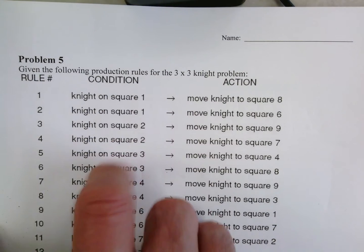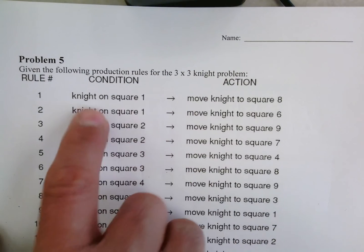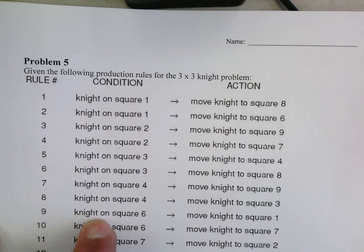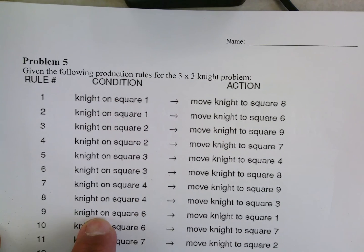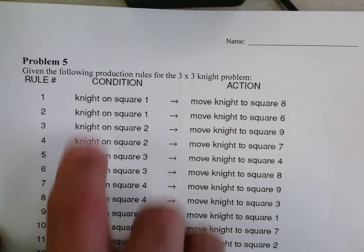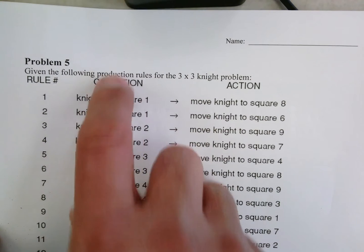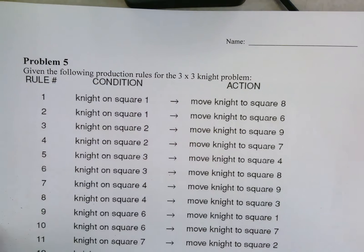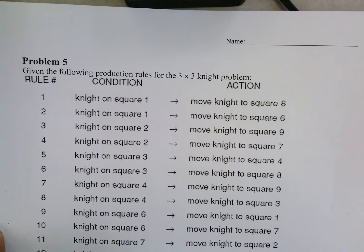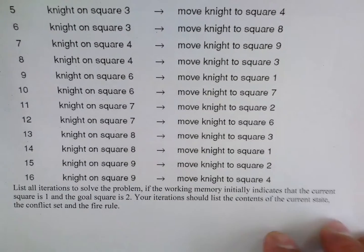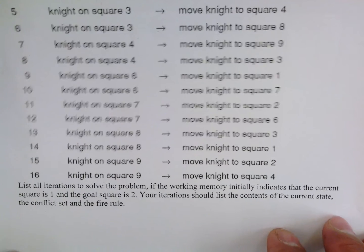When multiple rules are matched, we execute the first one that matches. That's the approach we follow in Prolog — we go through the rules from top to bottom and fire the first one that matches.